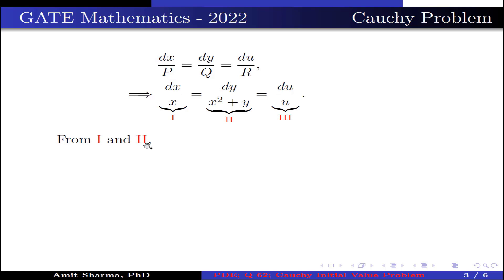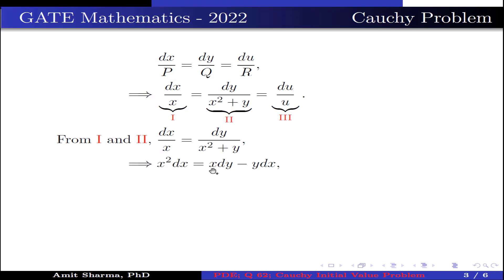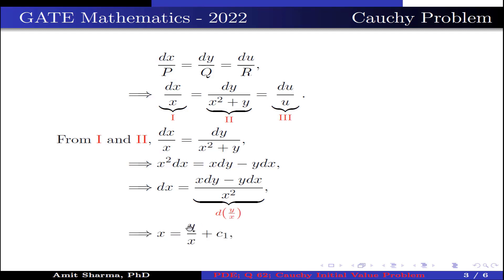From equations 1 and 2, we get dx/x = dy/(x² + y). Rearranging the terms, we get x²·dx = x·dy − y·dx. Dividing both sides by x², we get dx = (x·dy − y·dx)/x², which is the derivative of y/x. Now integrating both sides, we get x = y/x + c₁, where c₁ is an arbitrary constant. Therefore the value of c₁ is x − y/x.